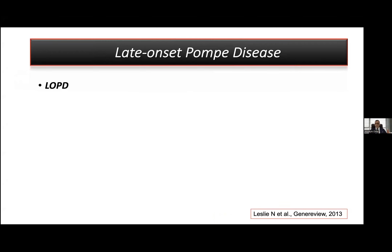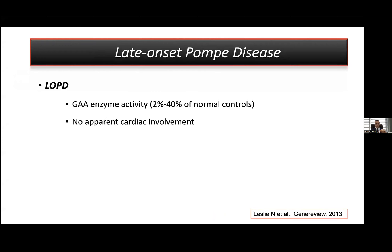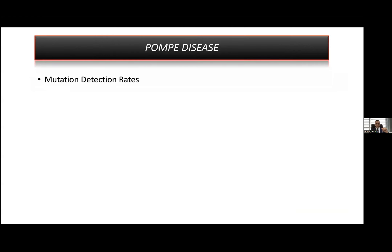In late onset Pompe cases, the phenotype is subtle. GAA enzyme activity is between 2% and 40%. There is no apparent cardiac involvement, but the main symptom is proximal muscular weakness. Due to this, it is one of the limb girdle muscular dystrophies. It is better to use a limb girdle muscular dystrophy panel to rapidly diagnose late onset Pompe cases. In some cases, we might also have respiratory insufficiency.